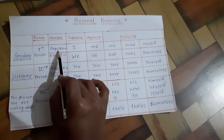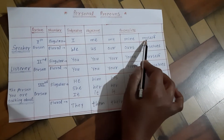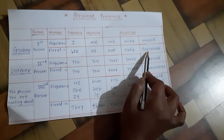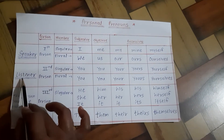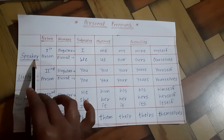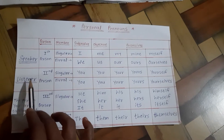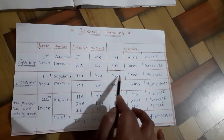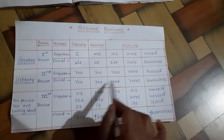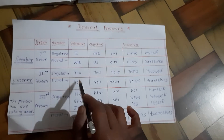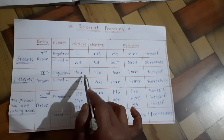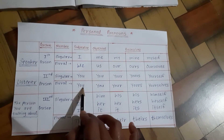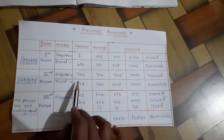For the first person, the speaker uses: singular — I, me, my, mine, myself; plural — we, us, our, ours, ourselves. For second person, the listener uses: singular — you, your, yours, yourself; plural — you, your, yours, yourselves. The spelling is the same in singular and plural for second person but the meaning differs.